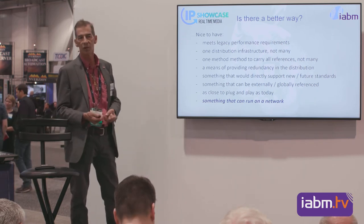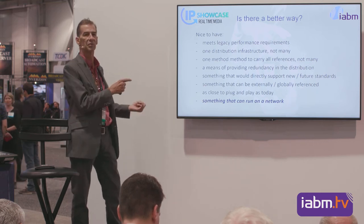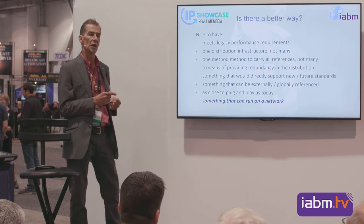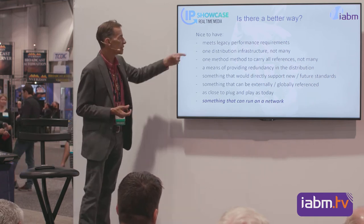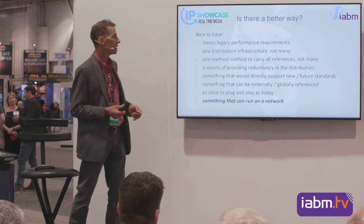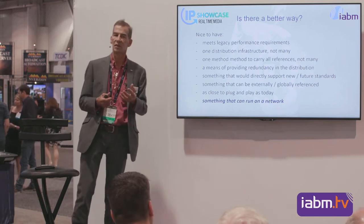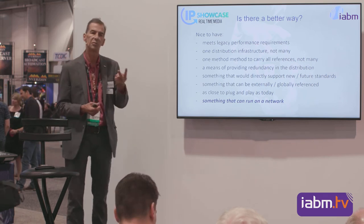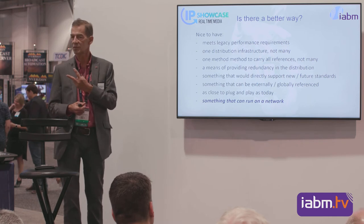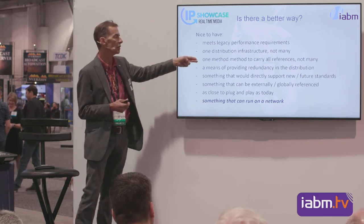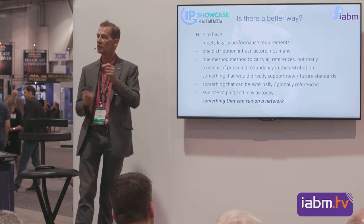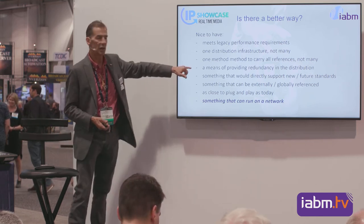We need to do what we did yesterday — we're not going to have a replacement infrastructure that throws away everything we've done. But it'd be nice to have one distribution infrastructure. Why have three? We want to carry all references on one method. If you have a dual-standard plant doing 50 Hz and 59.94, that's two Genlock structures — a giant pain. It would be great to carry audio, video, timecode, and multiple video formats on one infrastructure. We also need redundancy — if you lose your master, your TV station goes off the air.